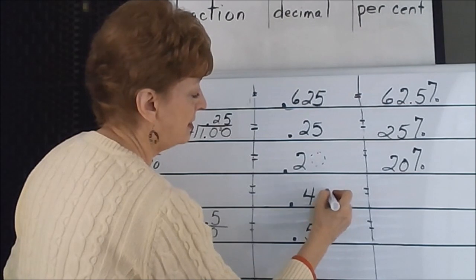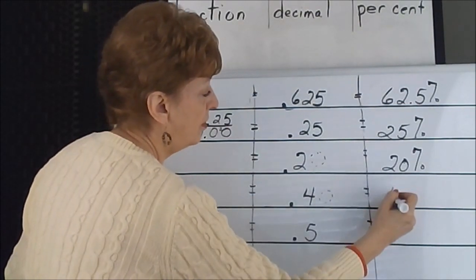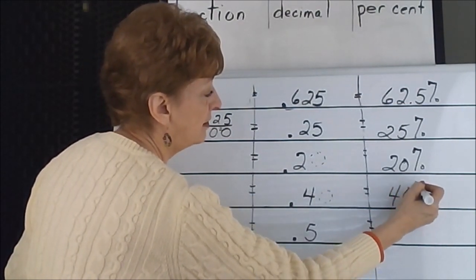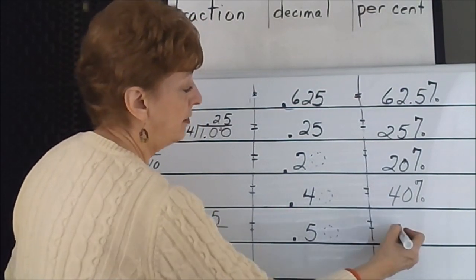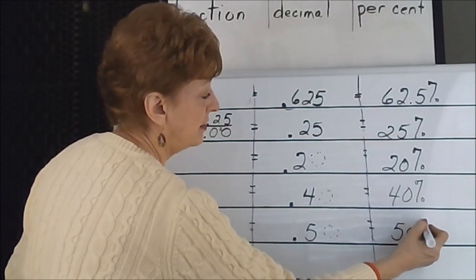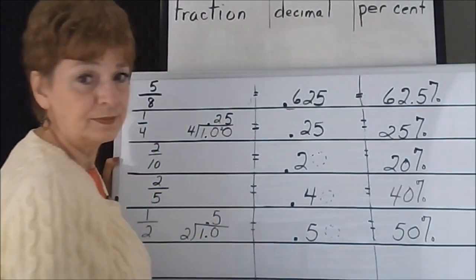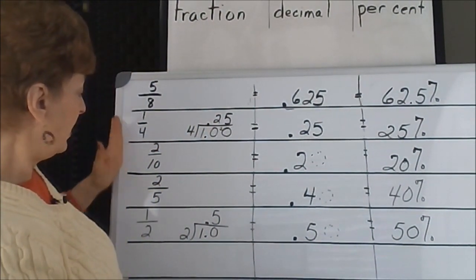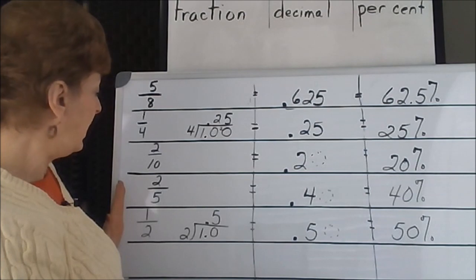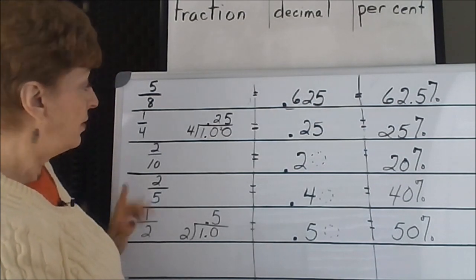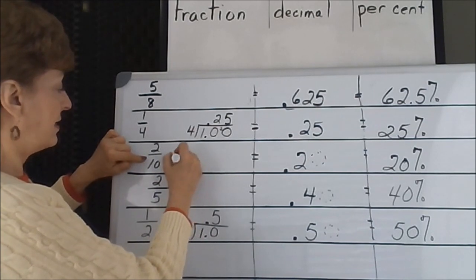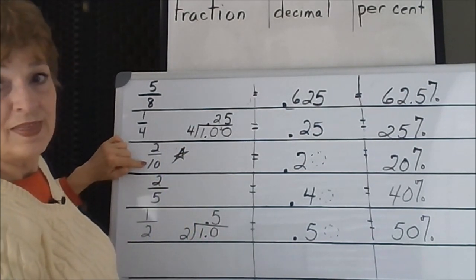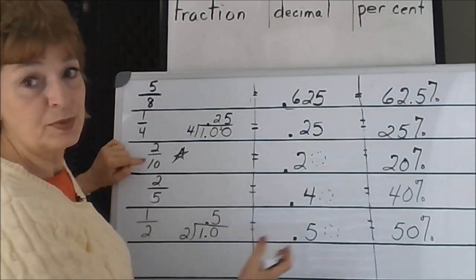Again, we need a 0 on this to make it 2 places over, 40%. 50%. And this one needs a 0 as well, 50%. The fraction area is the only one that we need to change through division unless it has, like in this case, a denominator that names one of the decimal columns.